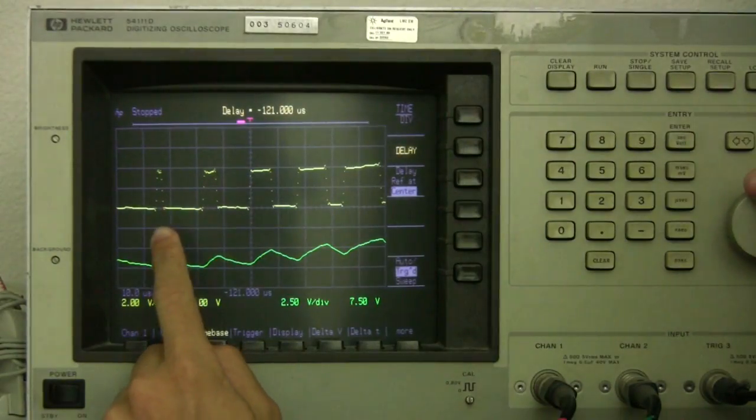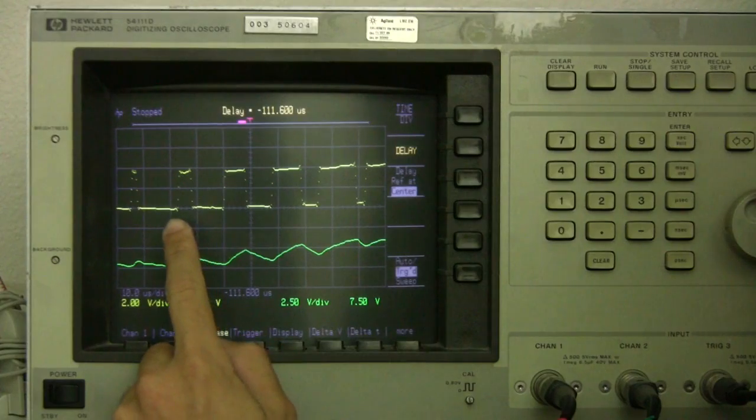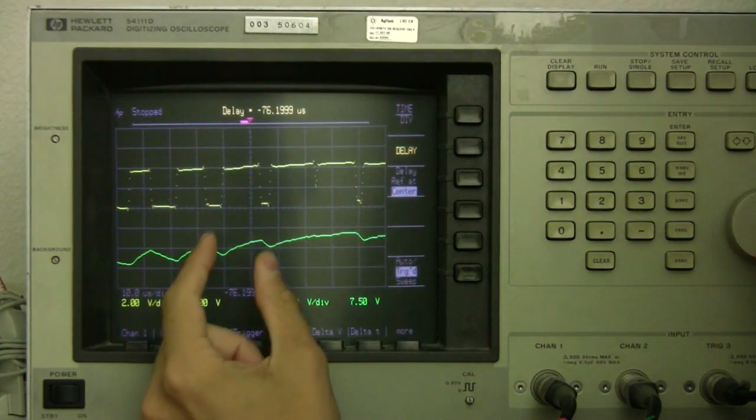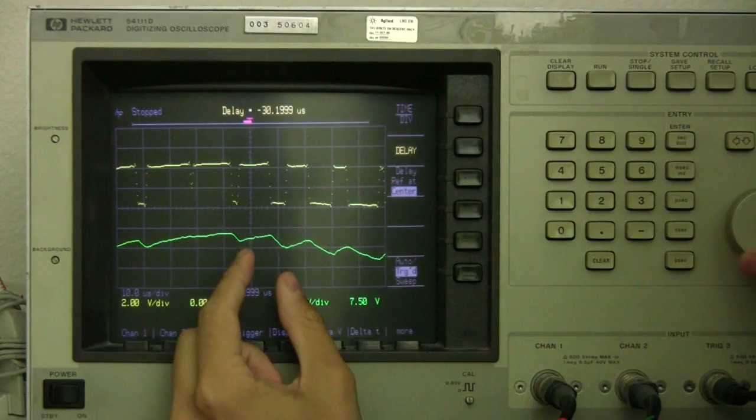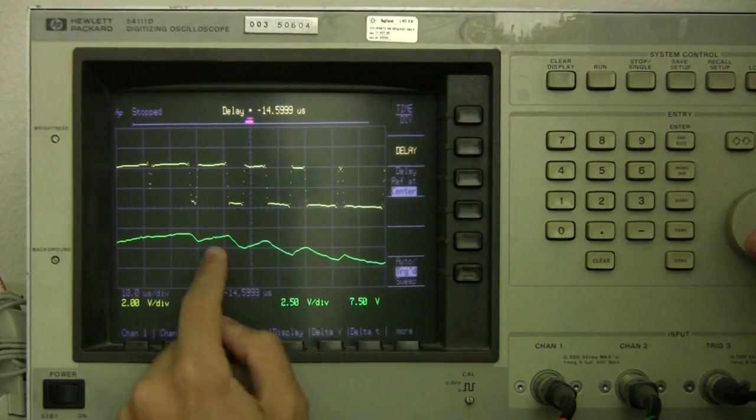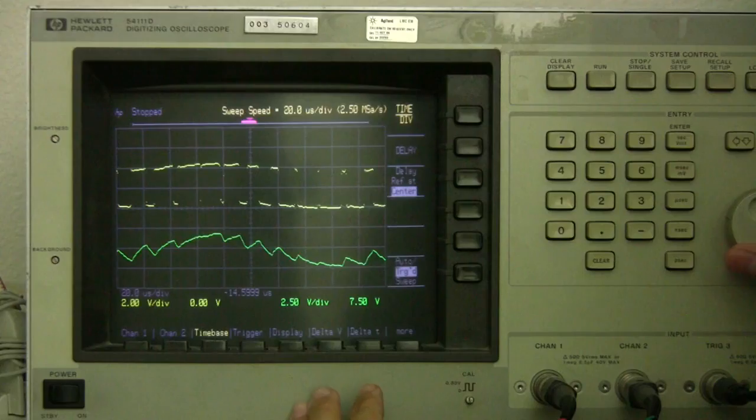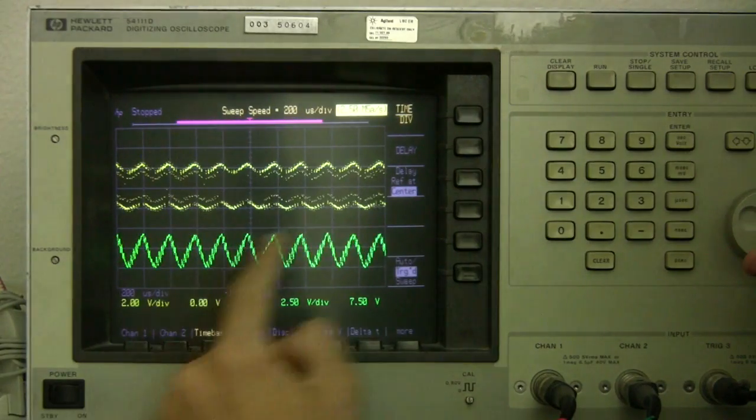Here on the yellow trace, you are seeing the PWM signal on an oscilloscope. If I scroll across, you can see the duty cycle increasing and then decreasing. On the green trace, we are seeing a smoothed out version of the signal. And if I zoom out, you can see the triangle wave.